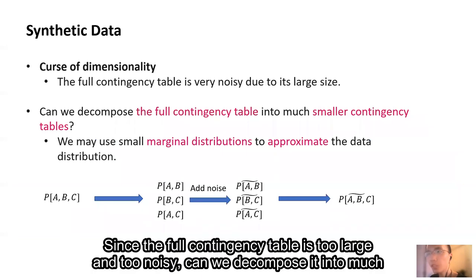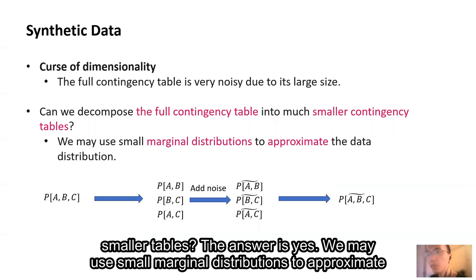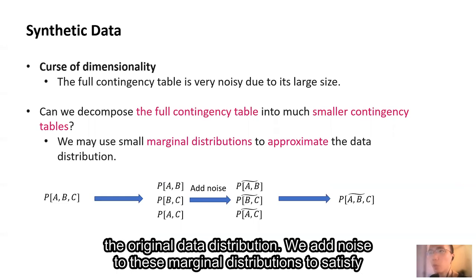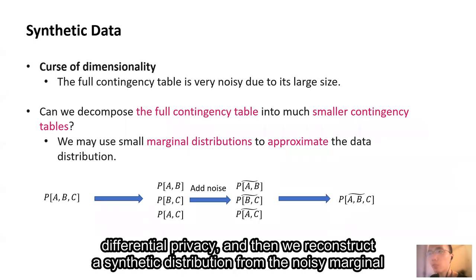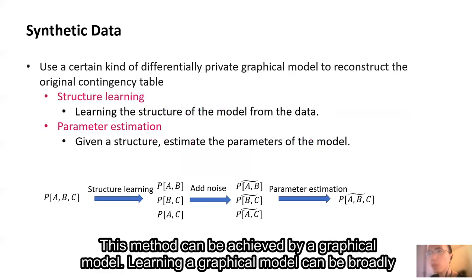Since the full contingency table is too large and too noisy, can we decompose it into much smaller tables? The answer is yes. We may use small marginal distributions to approximate the original data distribution. We add noise to these marginal distributions to satisfy differential privacy. And then, we reconstruct a synthetic distribution from the noisy marginal distributions.